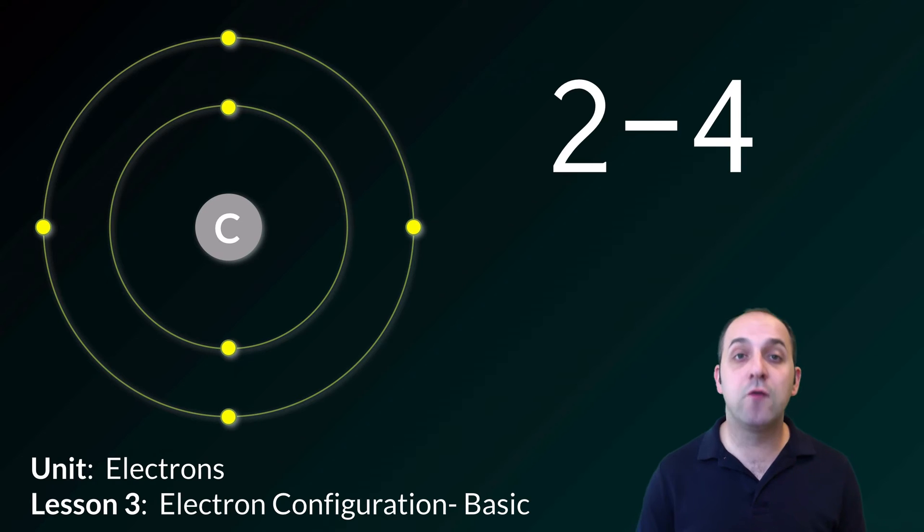The first configuration that we're going to look at is called the basic configuration and so for each of these I'm going to start with carbon and I'll give you the configuration for carbon for each of these as the example that we'll use. So let's go in and talk about basic electron configurations.